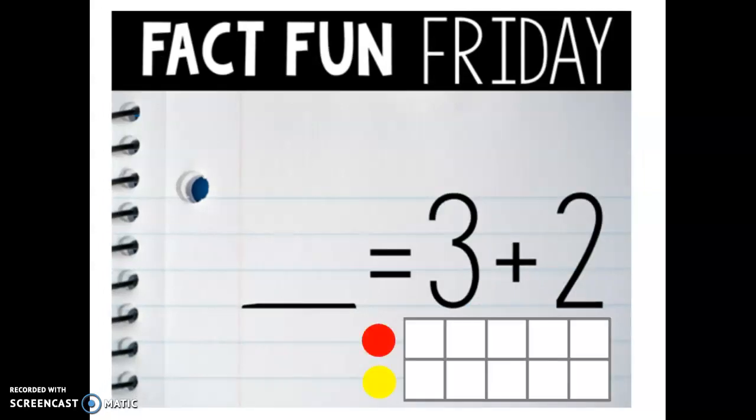All right. Again, we have blank equals three plus two. And I am going to use a ten frame to help me solve this problem. So I need three red dots. And then I need to add two more. So I am going to use my yellow. One, two. And three plus two equals five. So blank equals three plus two. We need the number five.